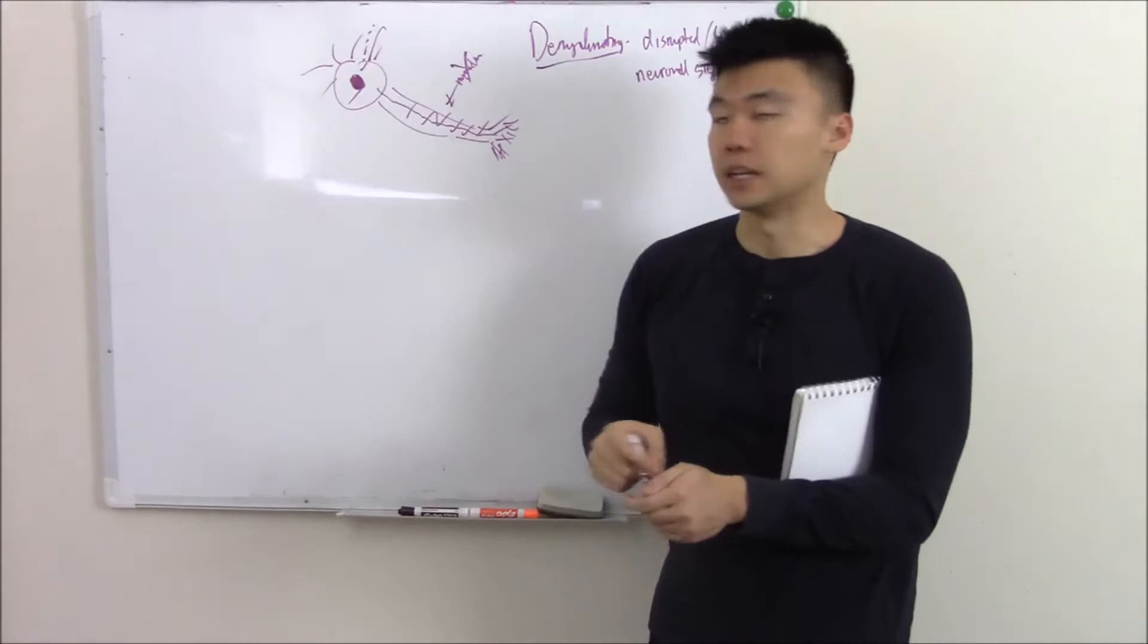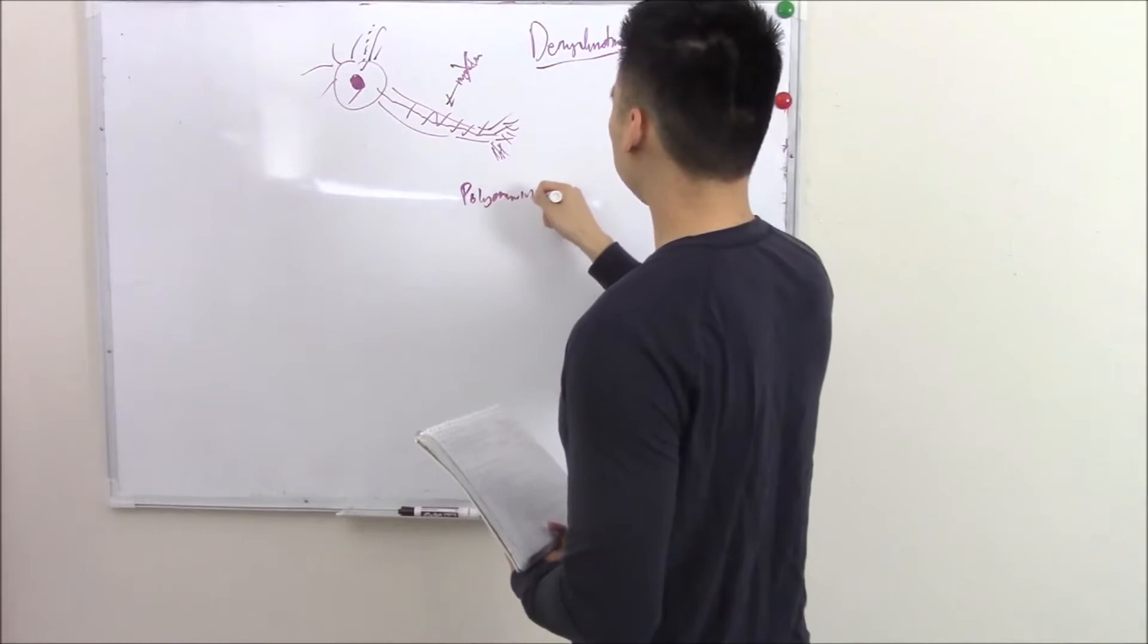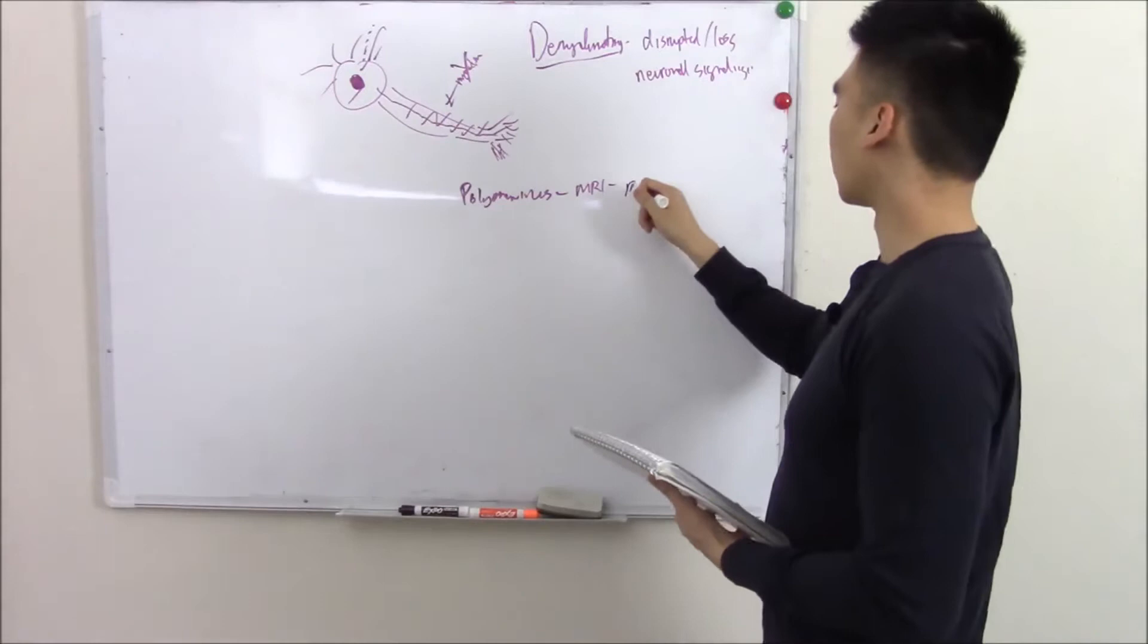We talked about our JC virus—that's your John Cunningham virus or your polyoma virus. They cause demyelination, and you can see that demyelination on MRI. You're going to see this diffuse white lesion, sometimes called non-ring enhancing. What does non-ring enhancing mean?